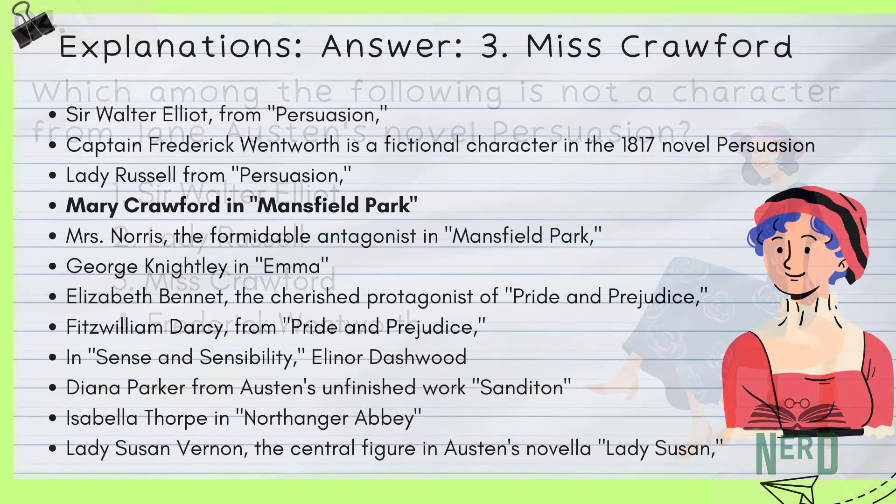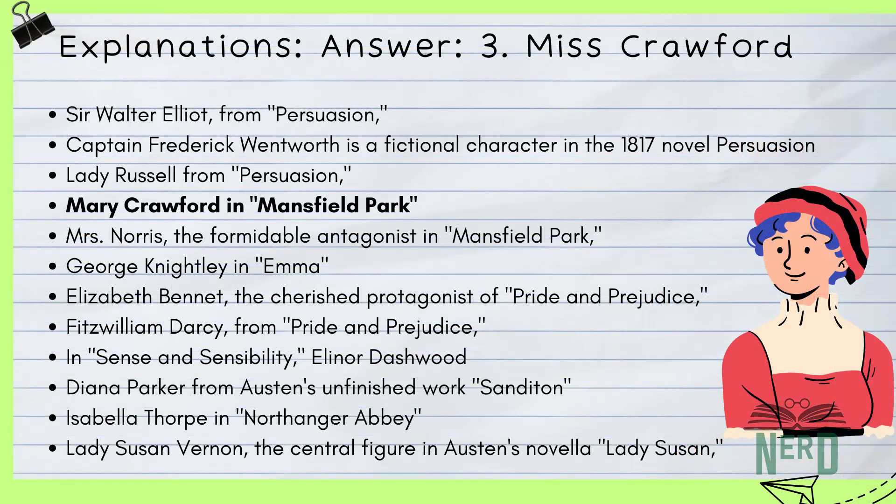Explanation: Sir Walter Elliot from Persuasion — picture this guy as the king of Vanity Fair. He's all about that high society life, obsessed with looking good and hanging out with the elite. He's not a fan of sailors because, in his eyes, their sun-kissed skin doesn't match the refined look he goes for. For your UGC Net, remember he's the epitome of self-obsession and a prime example of the shallow aristocracy Jane Austen loved to poke fun at.